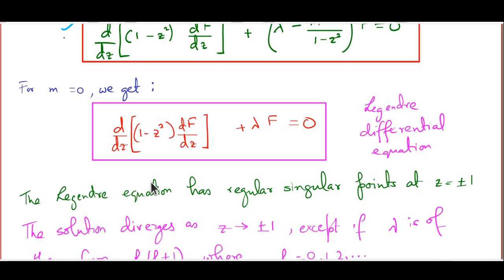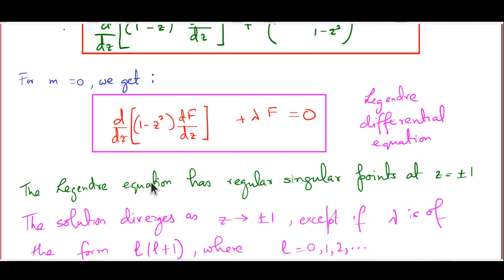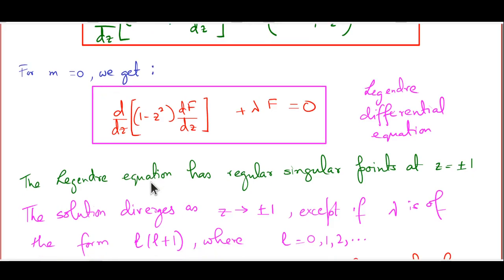To avoid divergence at z = ±1, we must choose lambda to take only certain special values: lambda must be of the form l(l+1) where l takes the values 0, 1, 2, 3, ... — non-negative integers. This tells us that the L² eigenvalue, which is lambda·ℏ², is quantized in the form l(l+1)ℏ² — so it can only be 0, then 2ℏ², then 6ℏ², and so on.